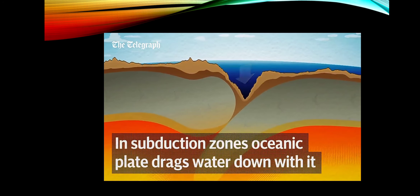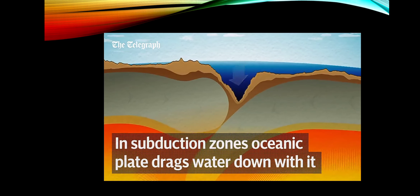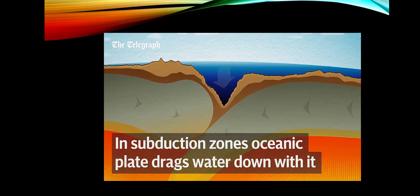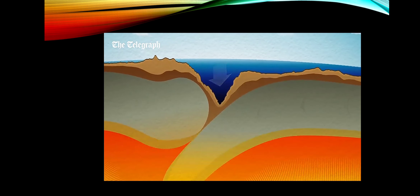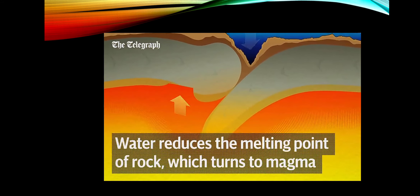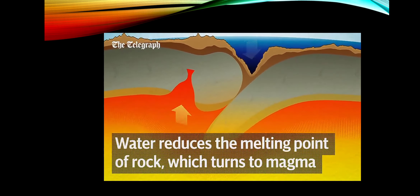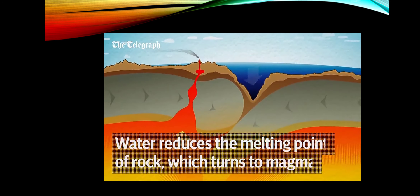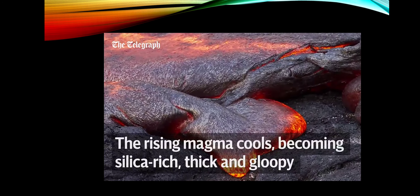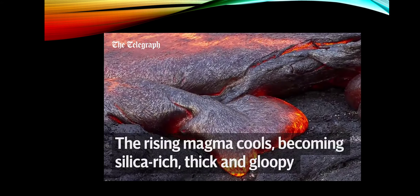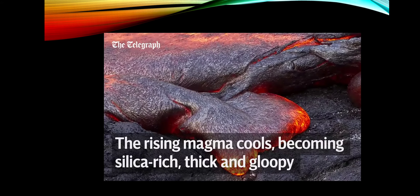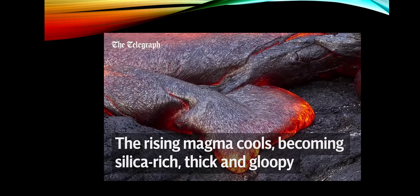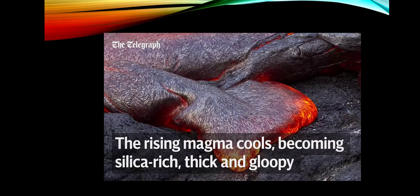At subduction plate boundaries, a thin oceanic plate slides under a thicker continental plate. The oceanic plate is saturated with water, which it drags down into the earth. At around 60 miles deep, the water trapped inside is released, which reduces the melting point of the surrounding rock, allowing it to melt. This melted rock cools as it rises. Different minerals cool at different rates, and one of the last to cool is silica. The magma which eventually reaches the surface is silica-rich, making it thick and gloopy.